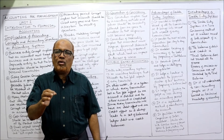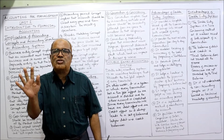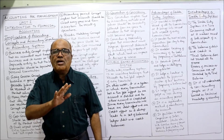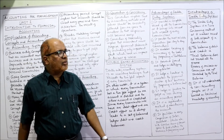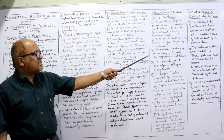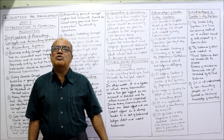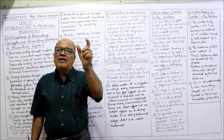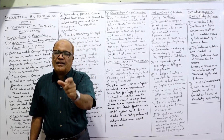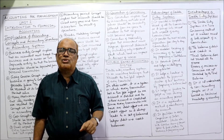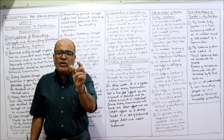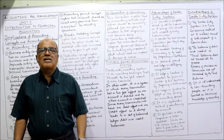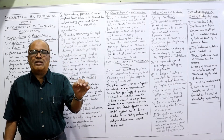The second advantage is it provides the most reliable information because every transaction is recorded and no transaction is left out — both aspects are recorded. Third, it enables testing the accuracy of the books of accounts by preparing a trial balance. At the end of the year, we take all debit and credit balances from ledger accounts, and if the totals of debit and credit are equal, it means there is arithmetical accuracy.